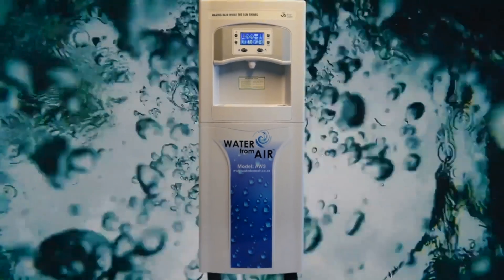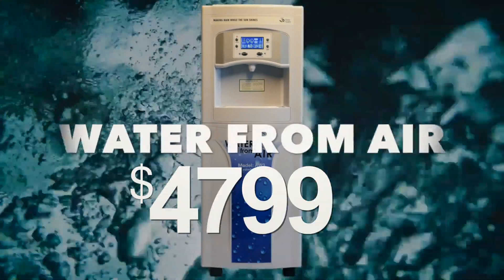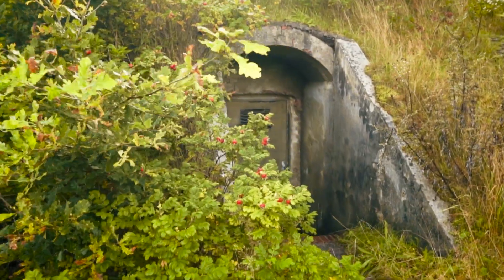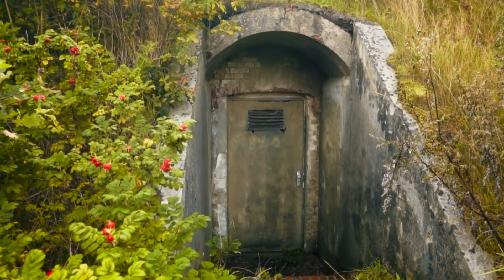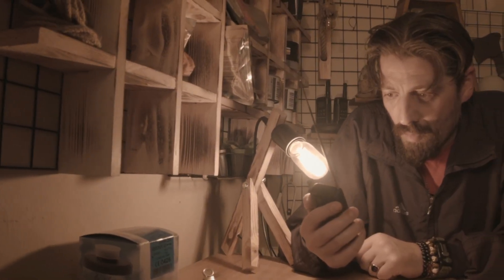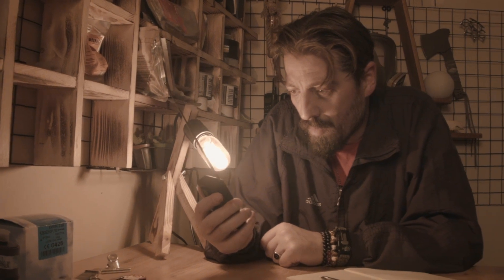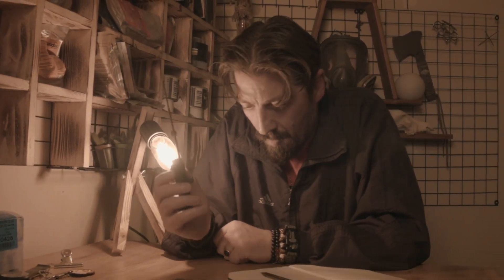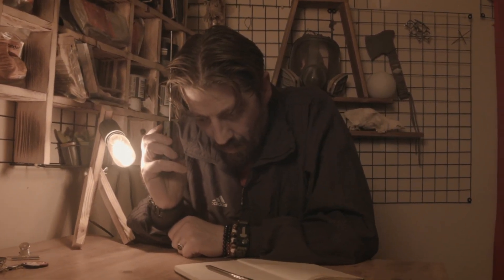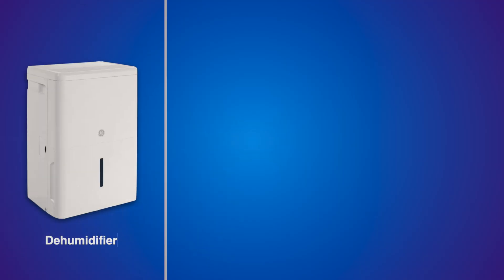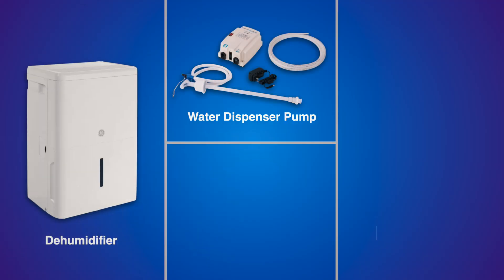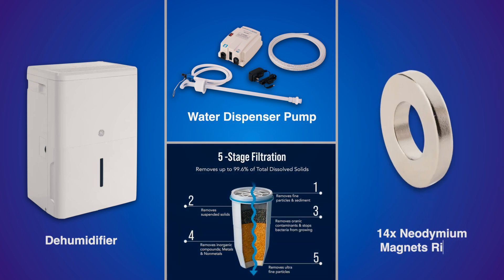You can buy an atmospheric water generator for the insane amount of three to four thousand dollars. I think the target market for them is people that have a bunker deep down in the ground preparing for the apocalypse. But we're gonna make one for a few hundred bucks. What we need is a dehumidifier, a pump to get it directly to the fridge, a good filter and 14 magnets of course.